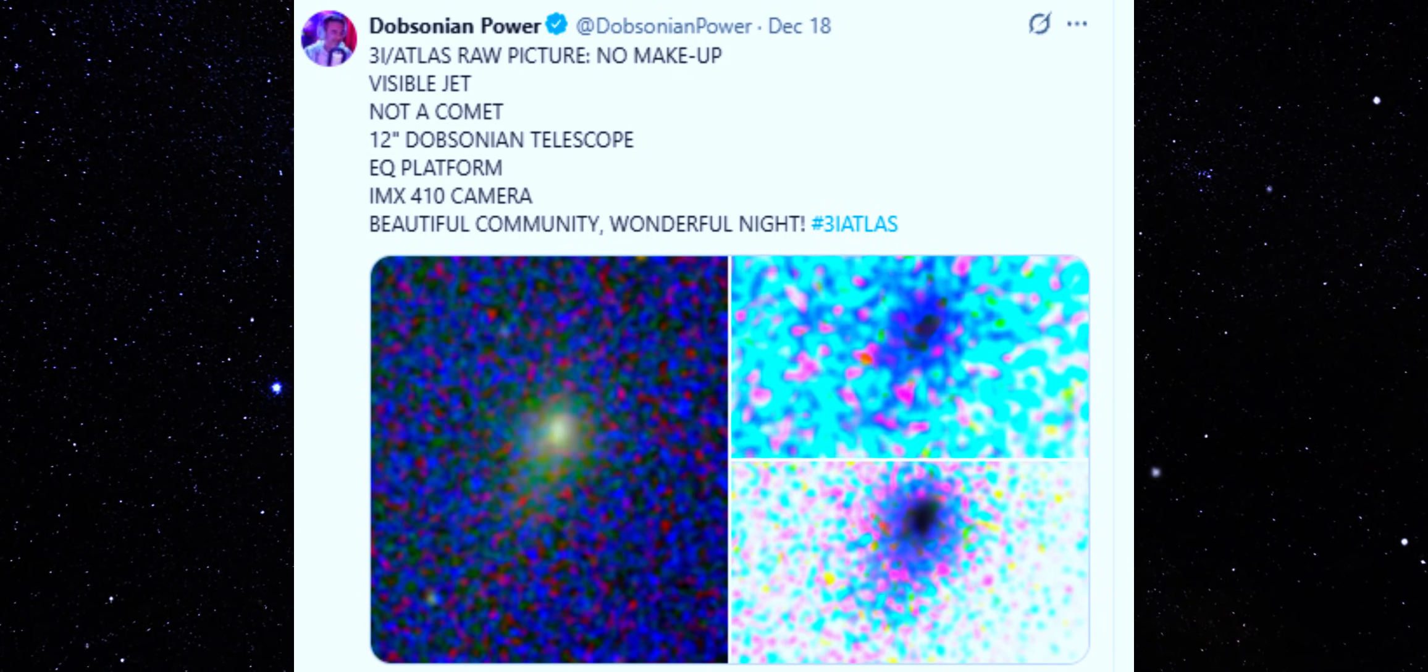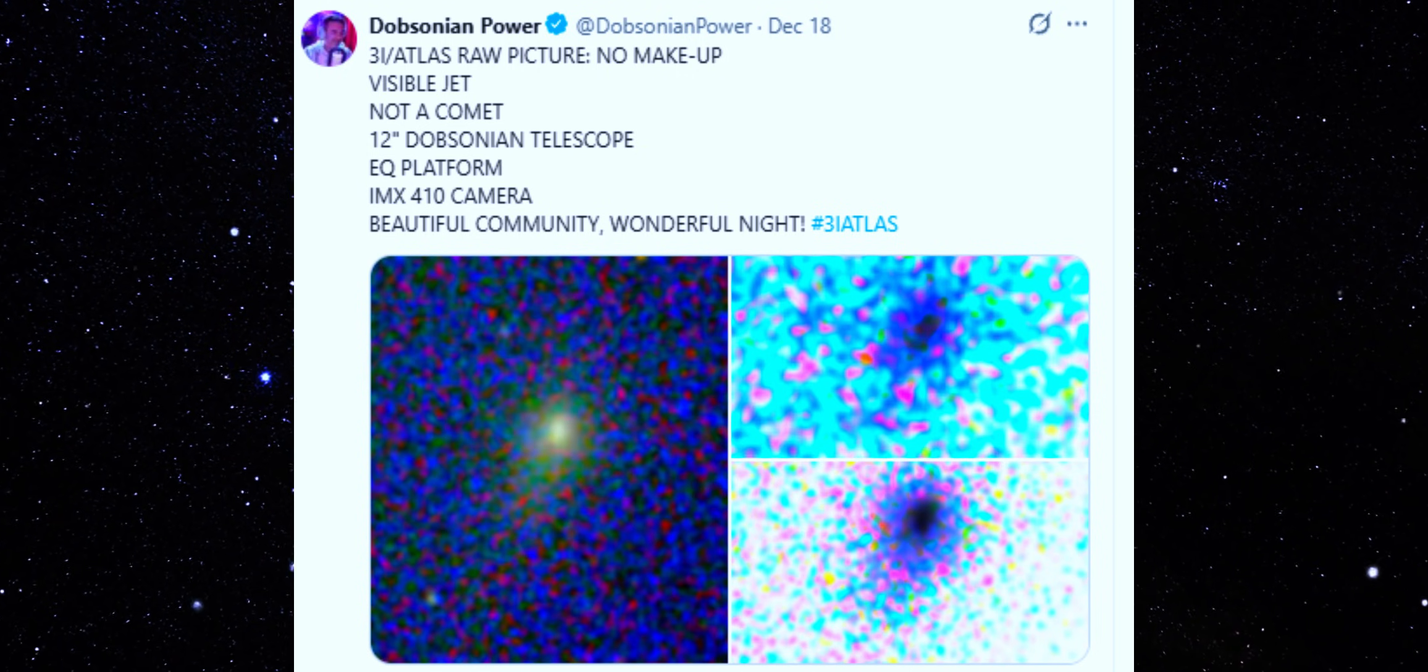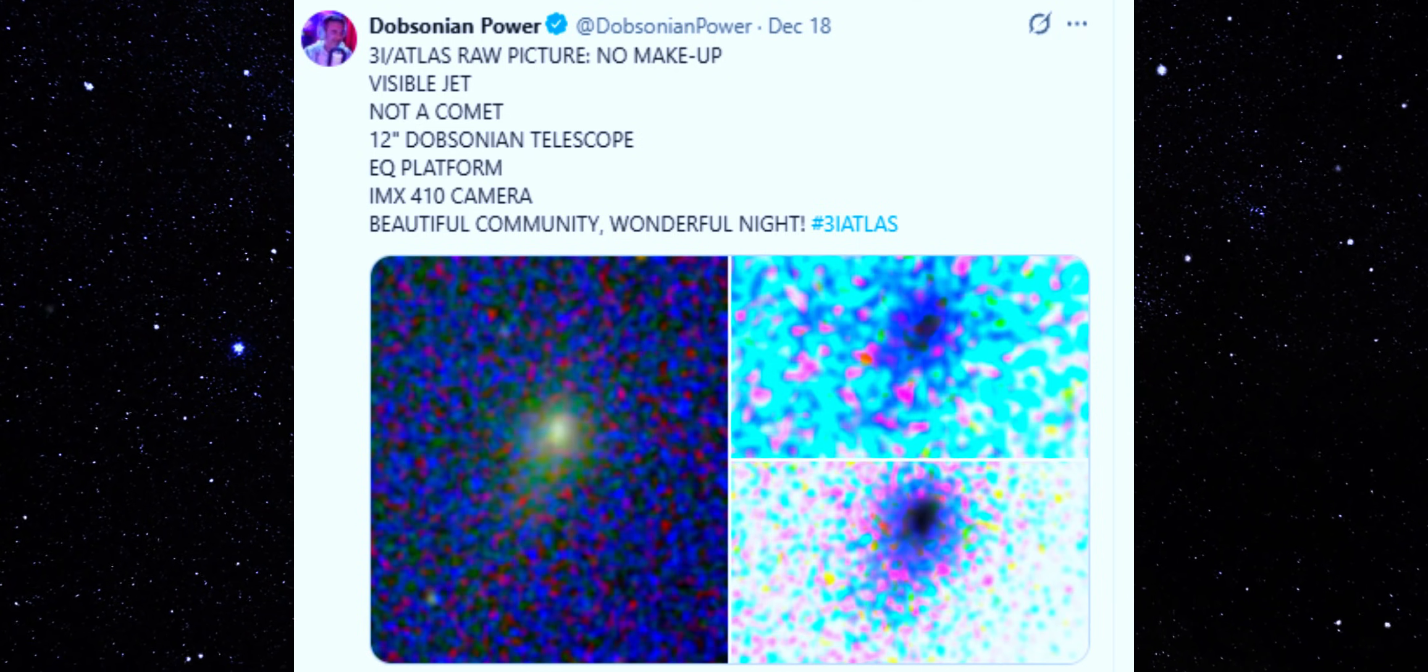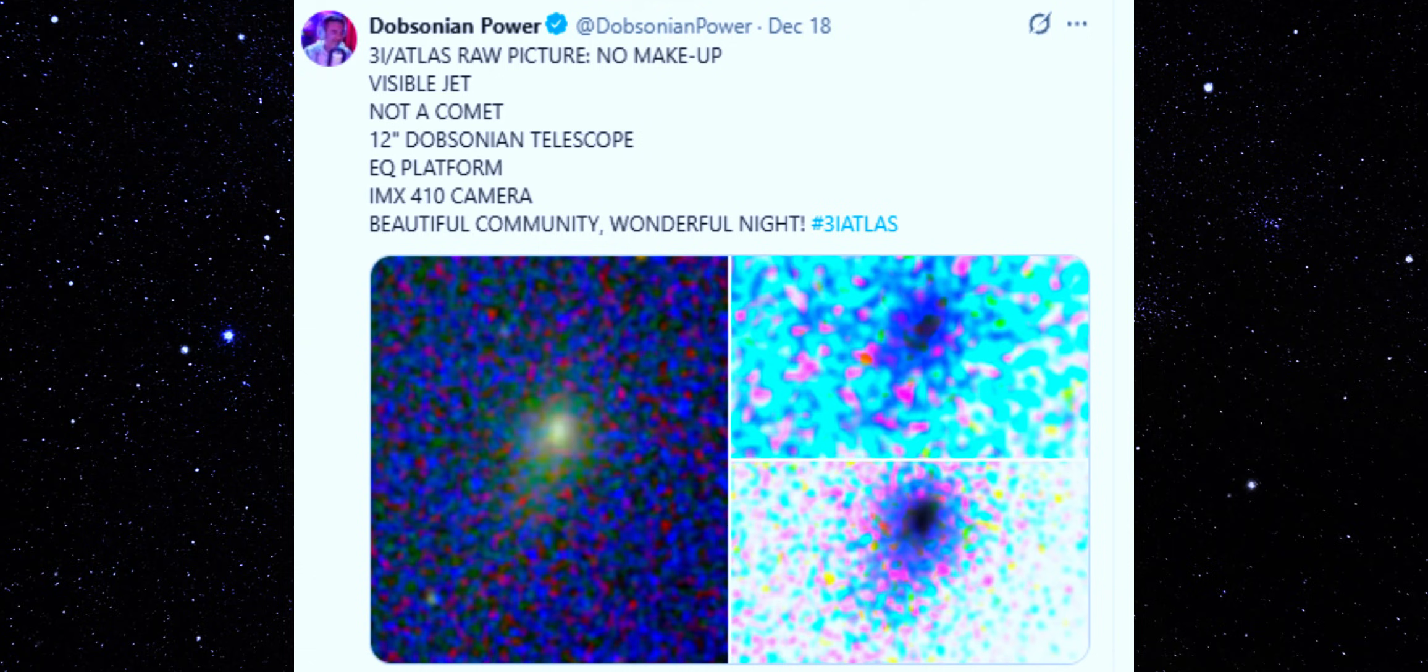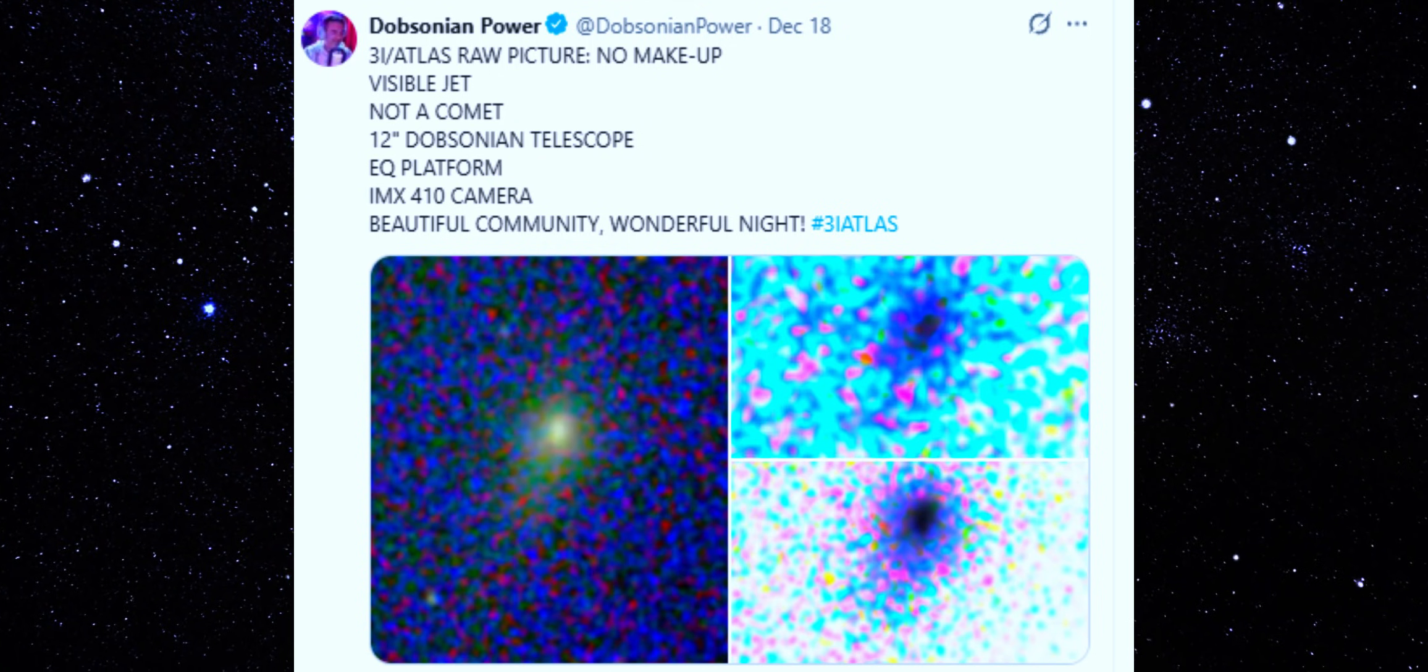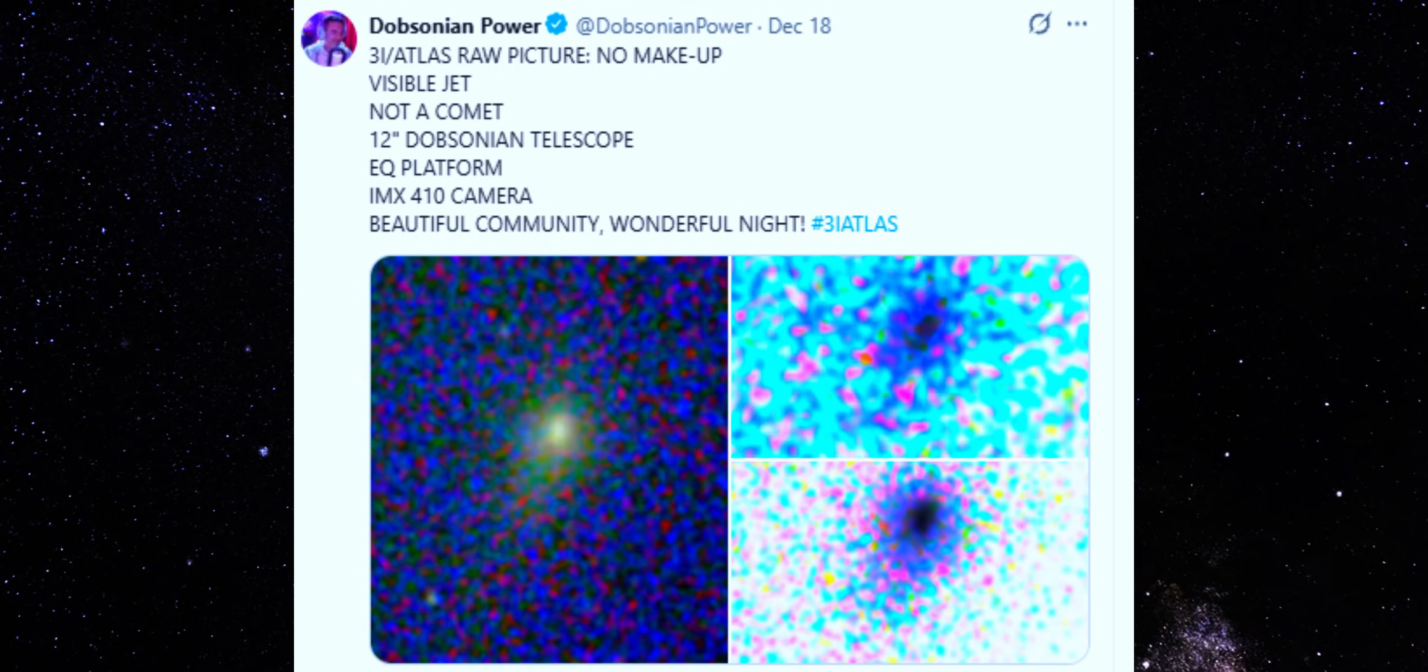A 12-inch Dobsonian, an EQ platform, a consumer-grade IMX410 camera, and yet a directed feature is already visible. Not teased out later, not invented in software. It's present in the RAW frame itself. That's why this image matters.